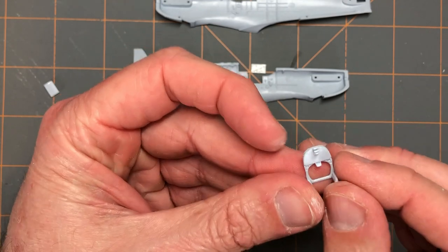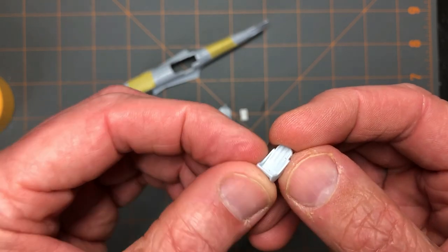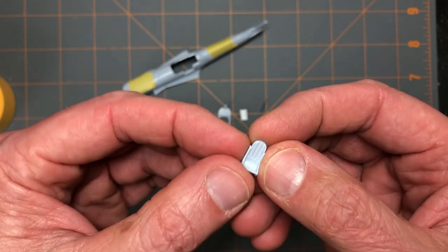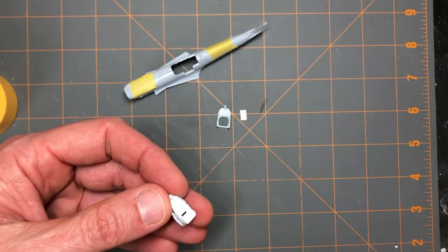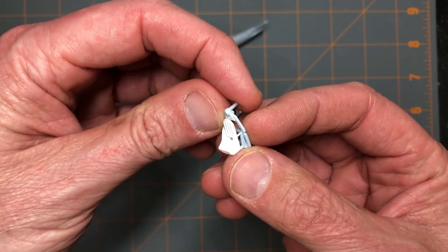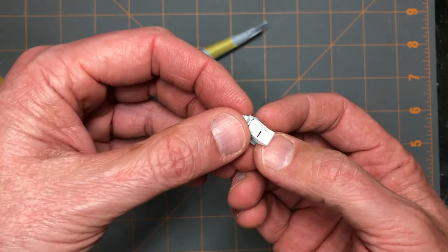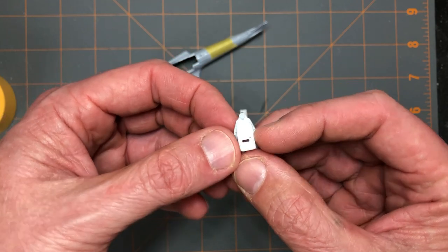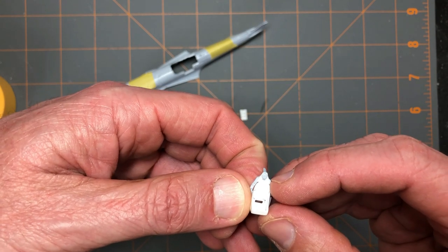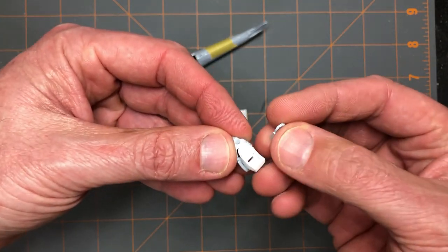I thought about reworking the kit seat just by sanding down the sides, but as I got to looking at the seat back cushion and kind of the overall lack of detail on it, I figured hey, why not just make another one? Using the same techniques I described in a previous video on how to make your own scratch-built seats, I just took a little evergreen sheet and a little bit of strip and scratched out the seat and the seat cushion. I also removed the headrest from the kit part, added a little bit of this armor plating you can see there in white, and then put the headrest back on.